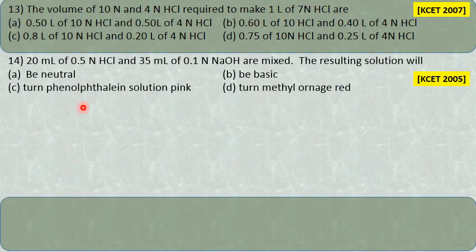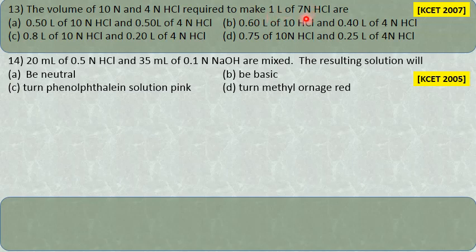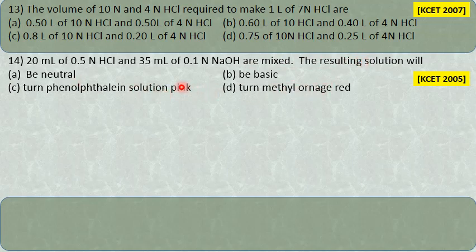Practice problems: (1) What volumes of 10 normal and 4 normal HCl are required to make 1 liter of 7 normal HCl? Use N1V1 + N2V2 = N3V3. (2) 20 mL of 0.5 normal HCl and 35 mL of 0.1 normal NaOH are mixed—is the resulting solution neutral, basic, or does it turn phenolphthalein pink or methyl orange red? Find number of equivalents of acid and base to determine.